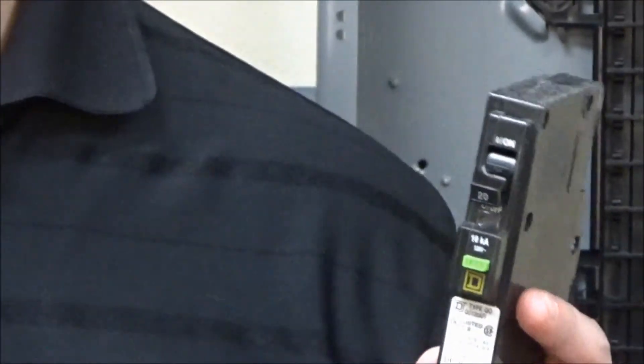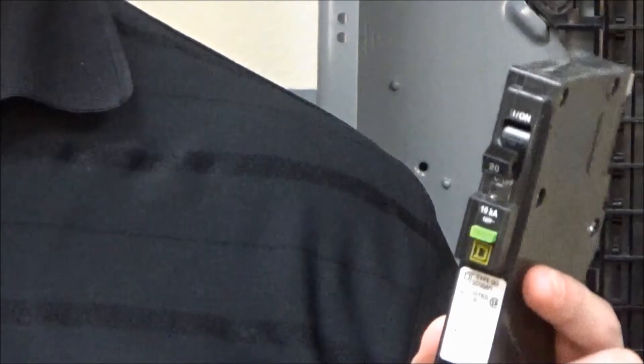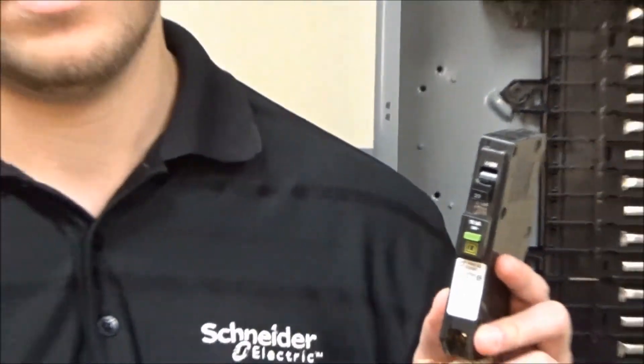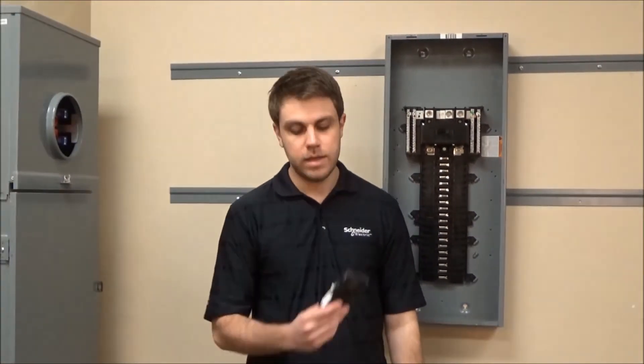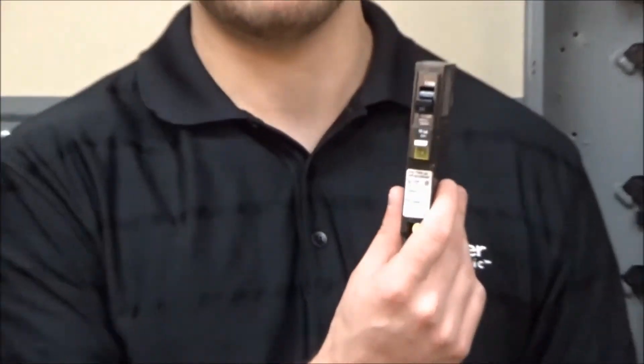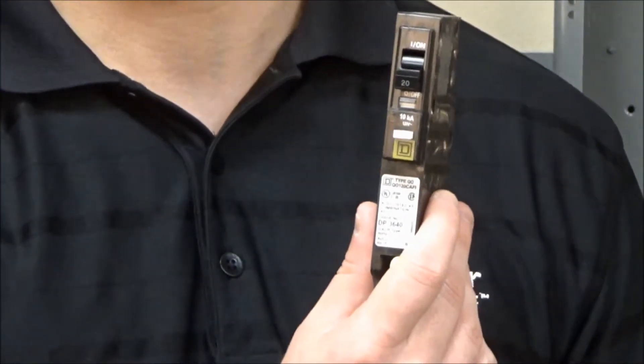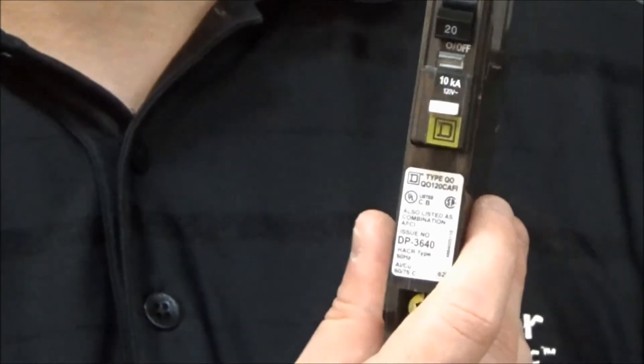The first breaker we're talking about is the arc fault interrupters or AFI breakers. They have the green test button. The other breaker we're talking about is our combination arc fault interrupter breakers or CAFI breakers. They have the white test button.